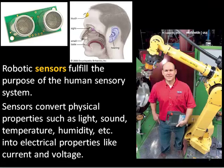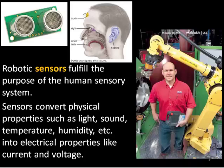The third area of study in robotics that we will be looking at is the use of sensors and machine vision. Robotic sensors fulfill the purpose of the human sensory system by converting physical properties like light, sound, temperature, humidity, etc. into electrical properties like current and voltage. When the sensory information given to our robot comes from a visible light camera, then we call the problem machine vision.